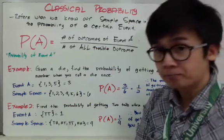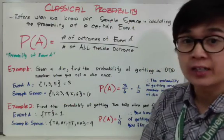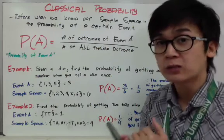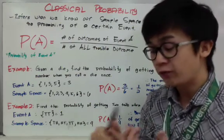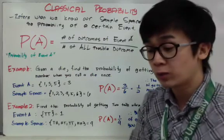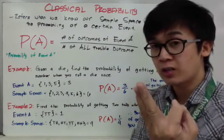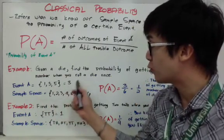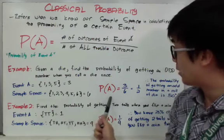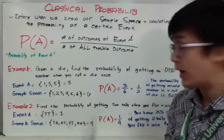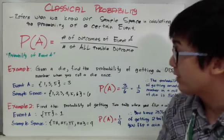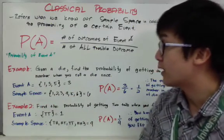Here's my first example: find the probability of getting an odd number when you roll a die. Using classical probability, I first list all possible outcomes for the sample space — that's my denominator, which is six. For the numerator, I list all outcomes in the event: getting an odd number. When rolling a die, the odd numbers are one, three, and five — so there are three possible outcomes. Therefore, P(A) equals three over six, or one half. The probability of getting an odd number when rolling a die is one half or 50%.